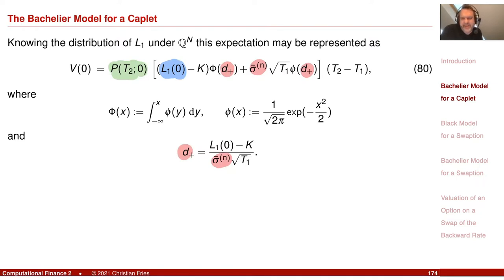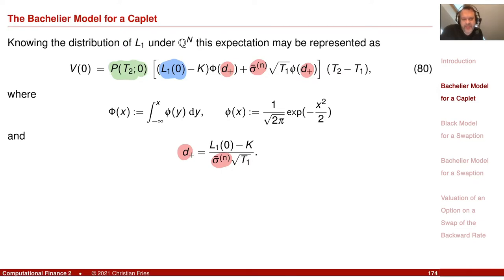Apart from the step where the derivation of the integral differs, the steps proceed in the same way: choose the numeraire wisely, then you know the distribution of the stuff inside the expectation, and calculate the expectation. That is the formula for the value of a Caplet under the Bachelier model. The Bachelier model is nice because it allows negative interest rates, whereas the Black model does not.